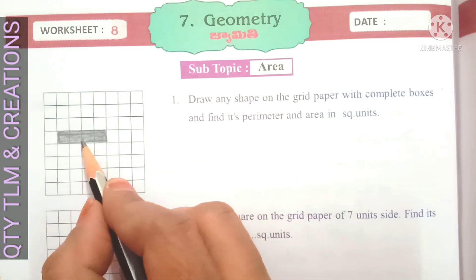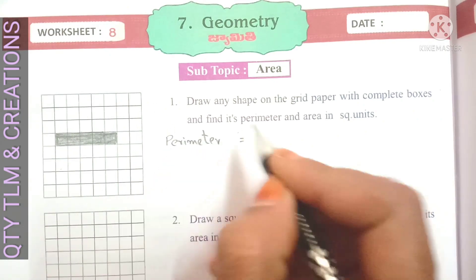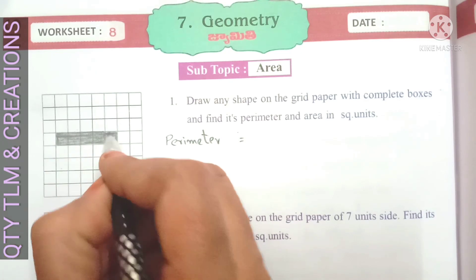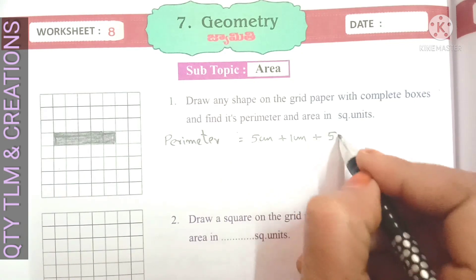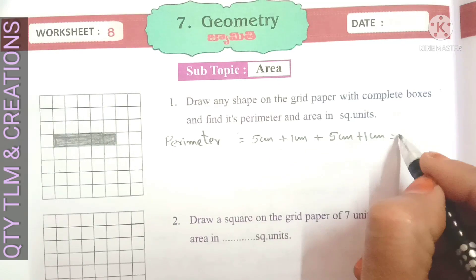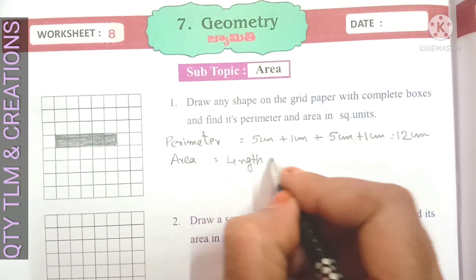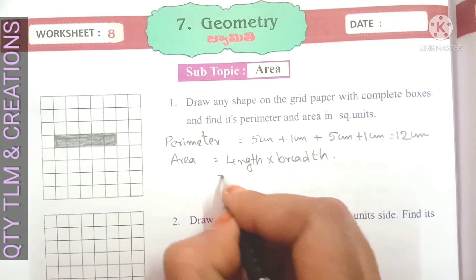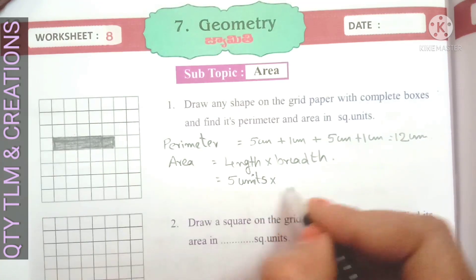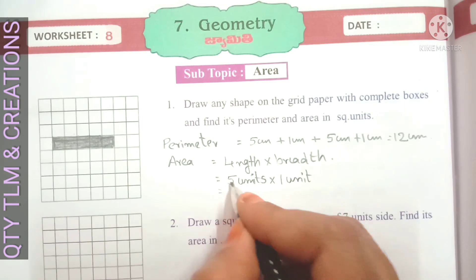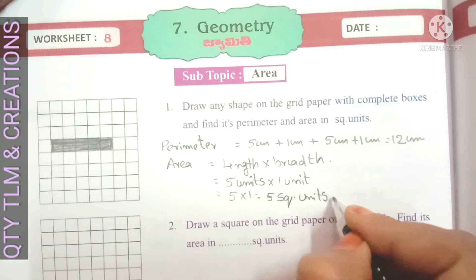You may color it whichever color you want. The perimeter is two lengths plus two breadths. Two lengths means five centimeters plus breadth is one centimeter, plus five centimeters plus one centimeter, that is equal to a total of 12 centimeters. Next, area is equal to length into breadth, so length is equal to five units into breadth is one unit, that is equal to five into one, which equals five square units.